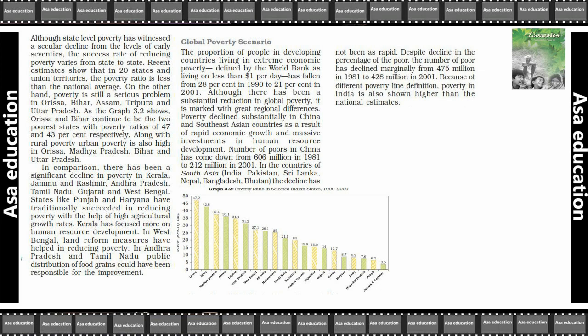Andhra Pradesh and Tamil Nadu have also shown improvement, where the PDS — the public distribution of food — has been a significant factor in that improvement.